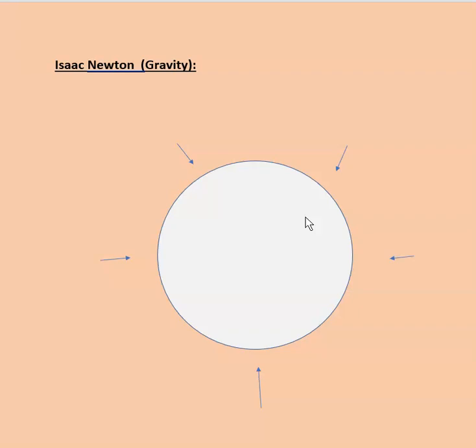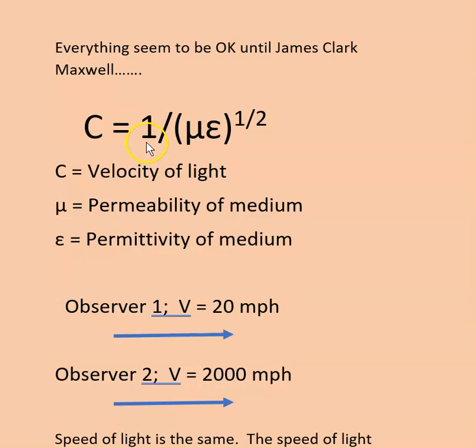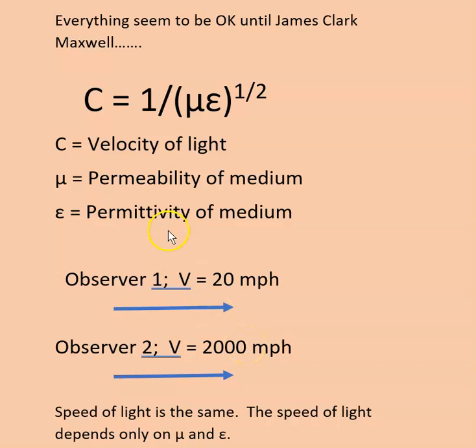Then came James Clerk Maxwell, and he came up with this equation: C equals one over the square root of mu epsilon, where mu and epsilon are the permeability and permittivity of the medium. If you look at this equation, the velocity of light has nothing to do with a person's velocity. Observer one moving at 20 miles per hour and observer two moving at 2,000 miles per hour would both find the same constant C. Now I've got another problem.